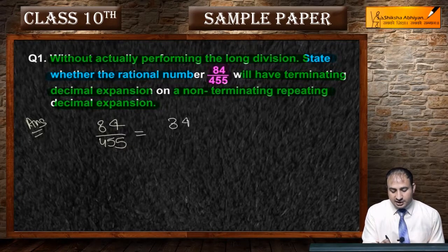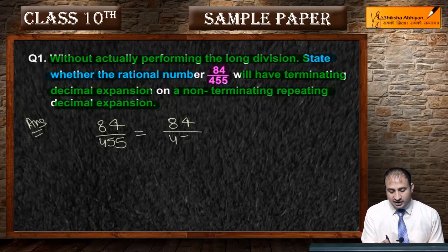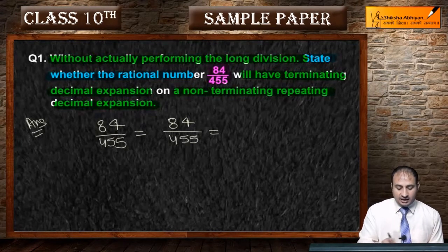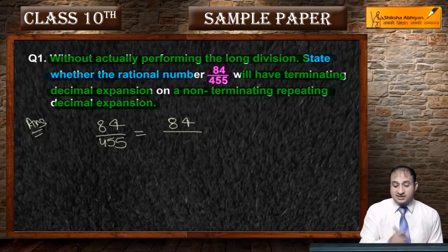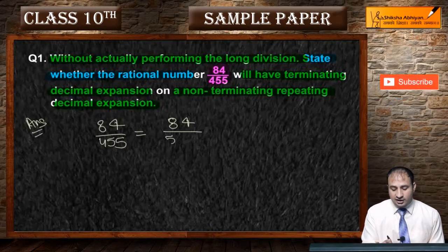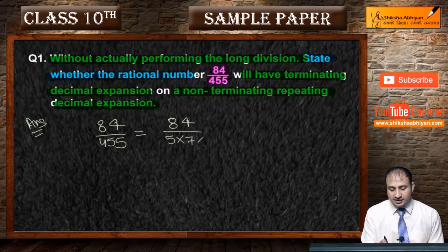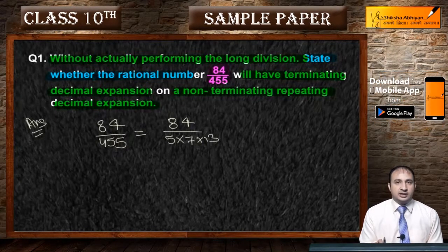Agar mai yahan par denominator ko dekho, to denominator kya hai? 455. Aur 455 ke jo factors hain, mai yah likh dekha hua hai — iske factor hote hain: 5 into 7 into 13. Yeh iske factor hote hain.